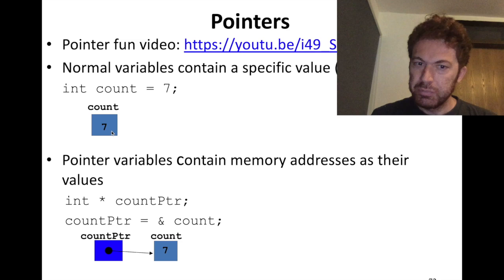Let me describe the same thing with slides. I have a variable 'count' equal to 7 — a memory with 7 in it is reserved. 'count_pointer' is a pointer to an integer — it stores an address — so I can set it to the address of the integer variable 'count'. So count_pointer is pointing to the address where 7 lives.